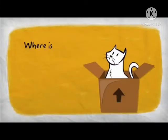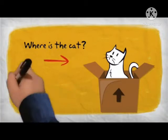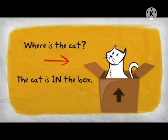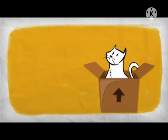Here we can see there is a cat in a box. Where is the cat? The cat is in the box. The word 'in' shows the place of the cat.